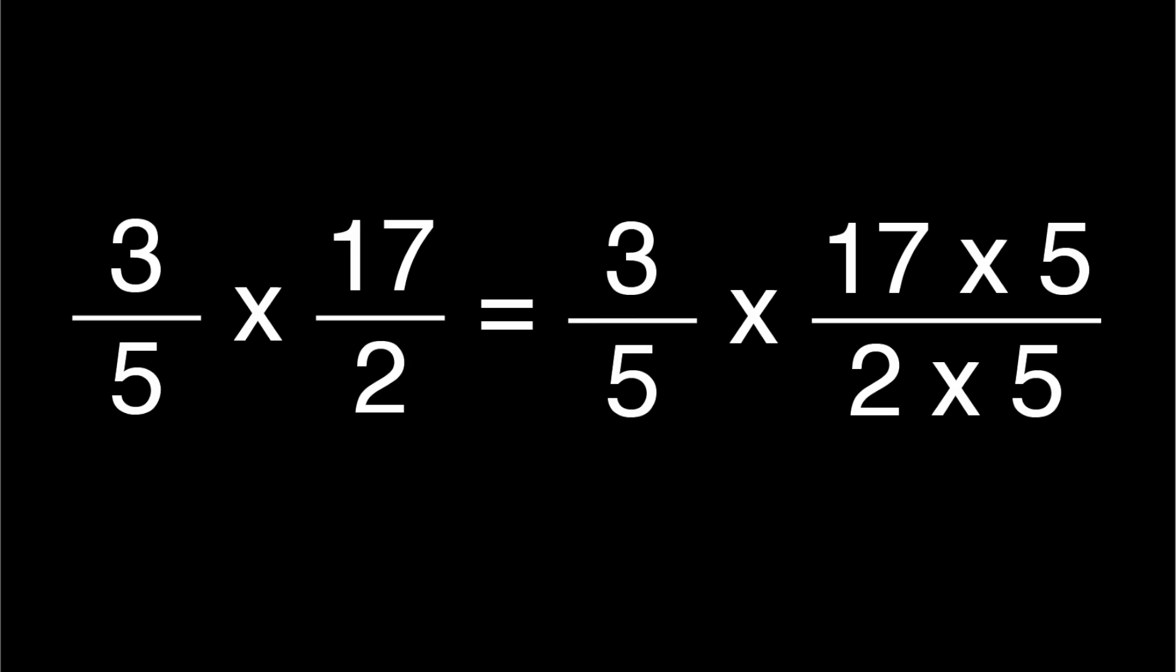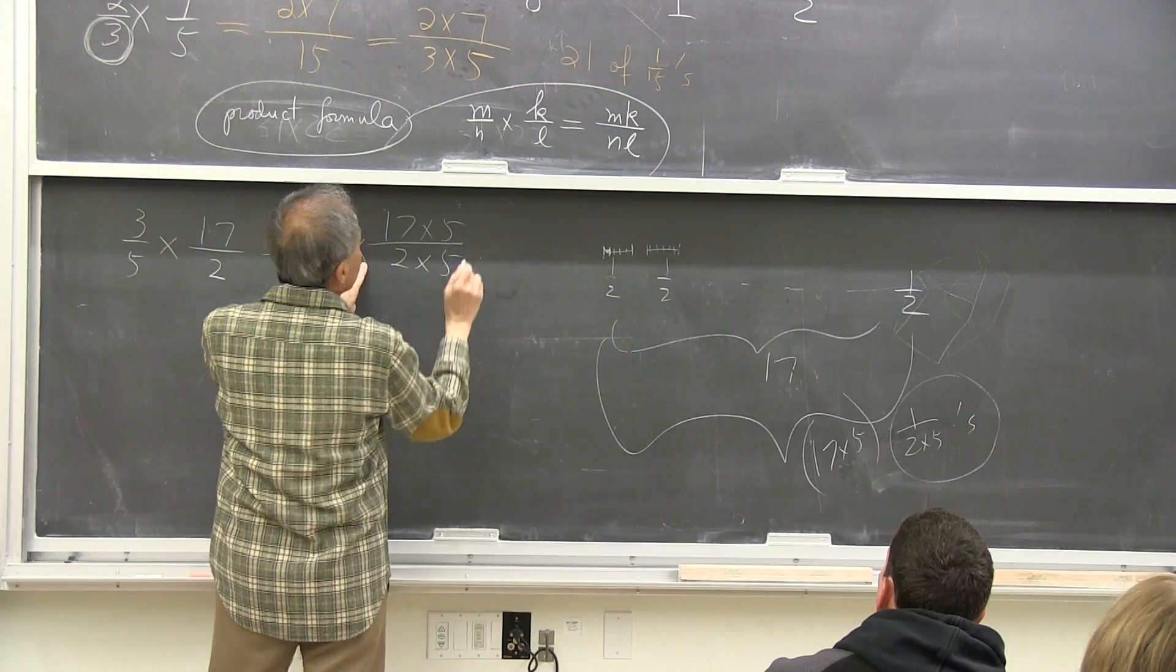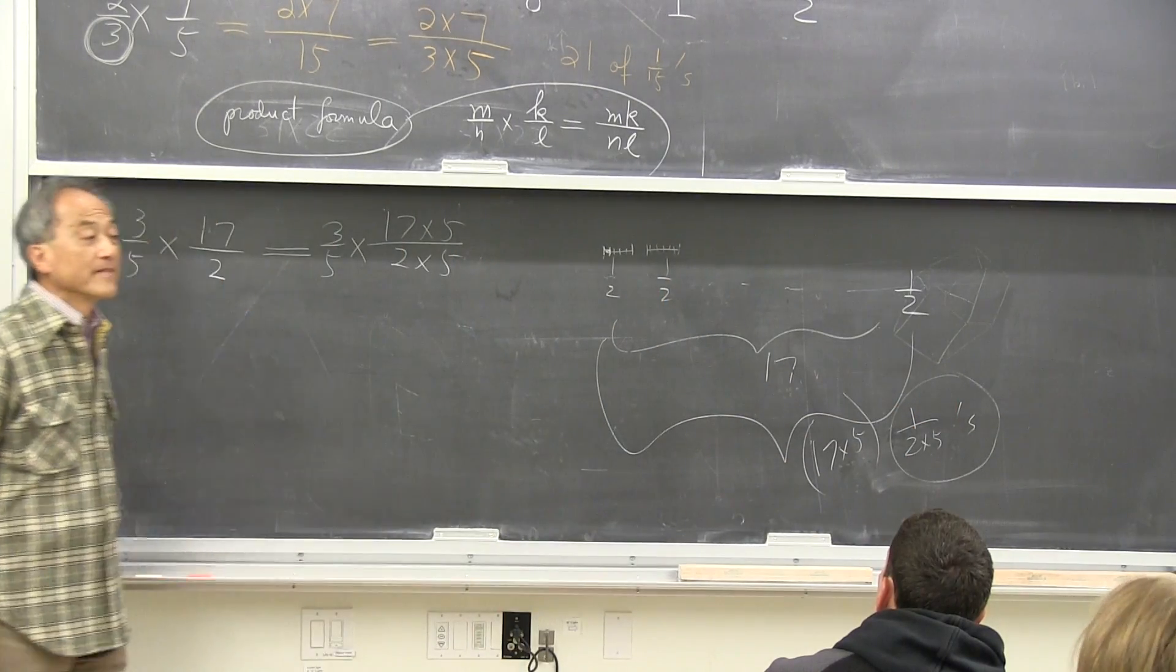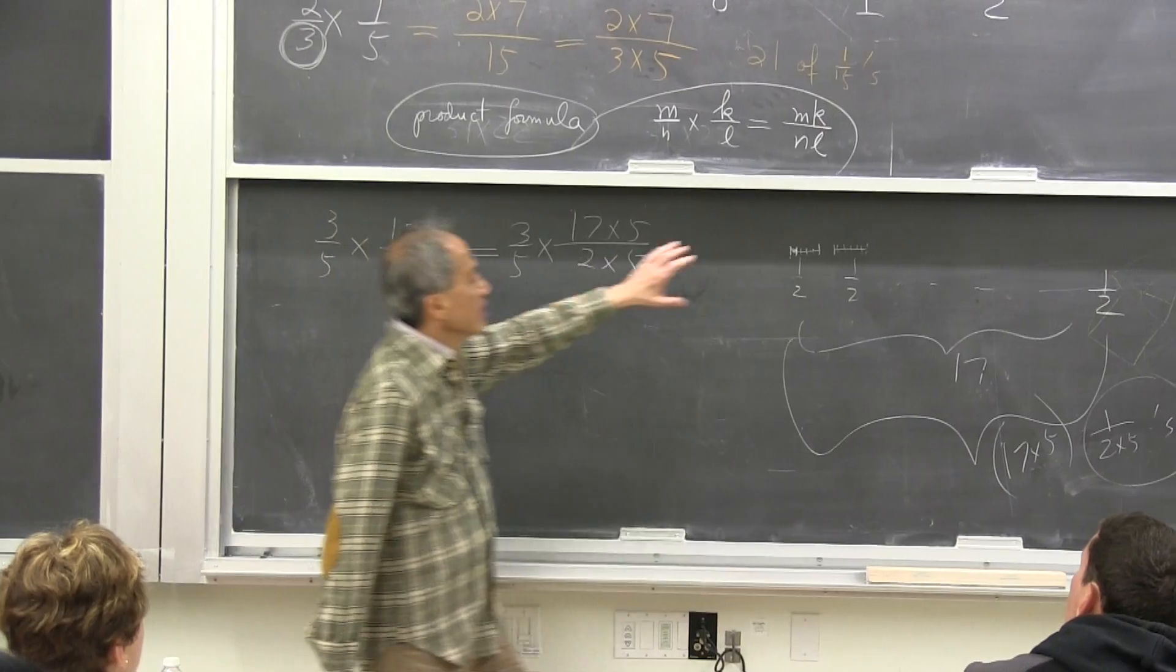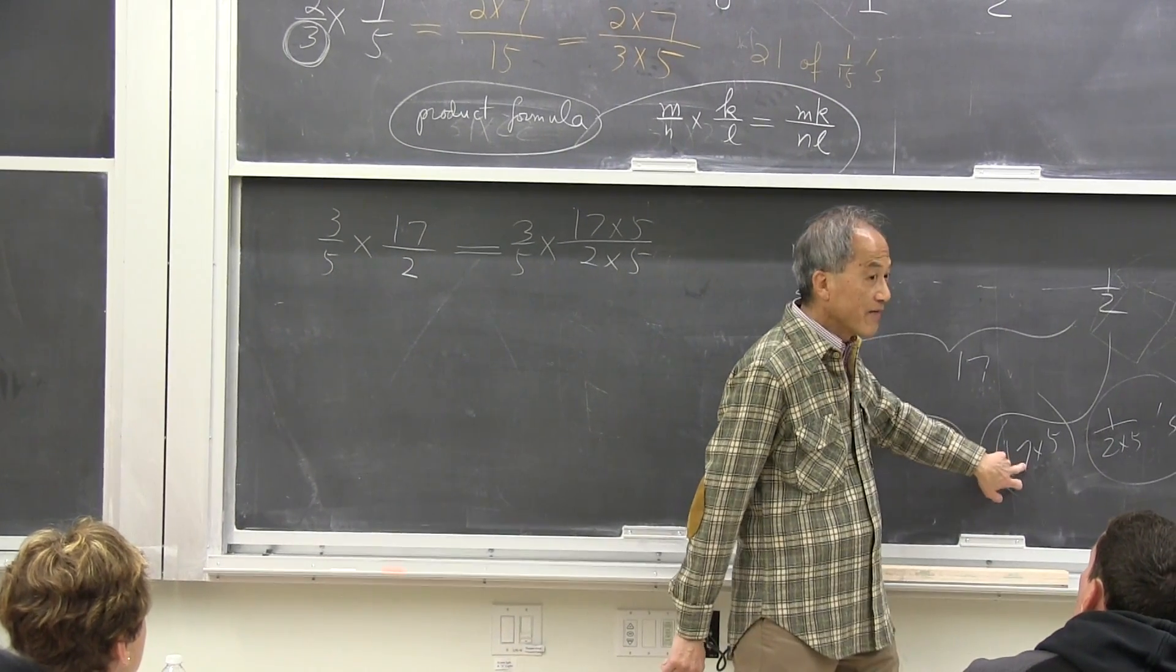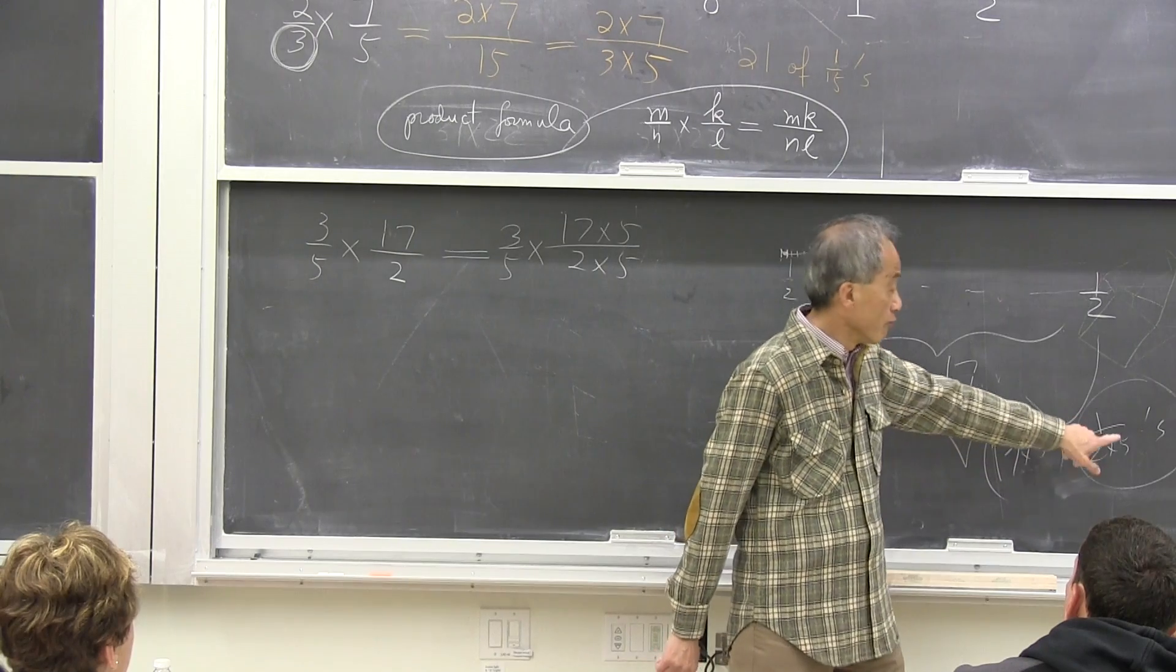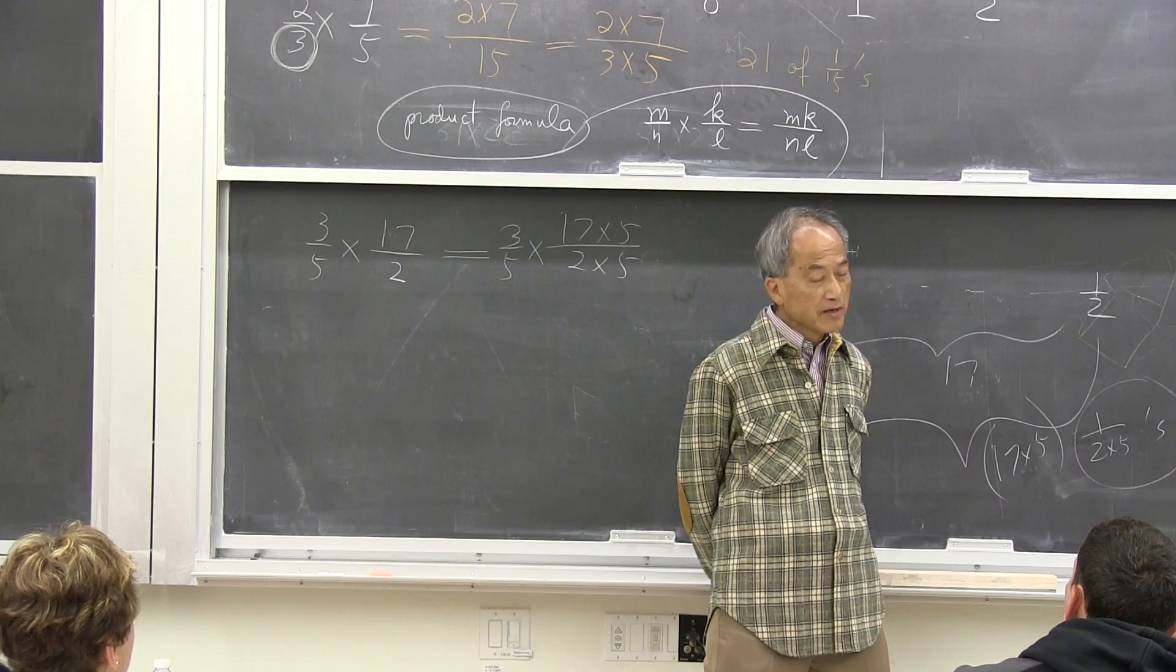So that means it becomes what? The same as 3/5 times 17 times 5 over 2 times 5. All right? Let's follow this. Make sure you follow this. The amount of 17 over 2 becomes 17 times 5 that many parts, or 1 over 2 times 5. All right?